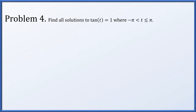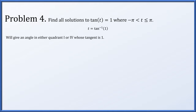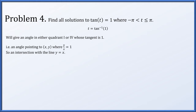In problem 4, we find all solutions to tangent of t equals 1, where t is in (minus pi, pi]. Taking arc tangent, t could equal arc tan(1). The range of arc tan is from minus pi over 2 to pi over 2, covering quadrants 1 and 4. Since the tangent is positive 1, the solution is in quadrant 1 — specifically, the angle on the unit circle where y over x equals 1, i.e., the intersection with the line y equals x.